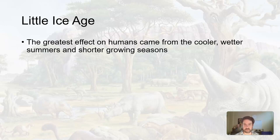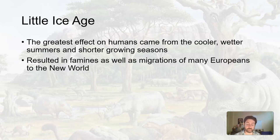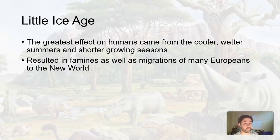The greatest effect on humans came from the cooler, wetter summers and shorter growing seasons. Because it was a little bit cooler in Europe, you had shorter growing seasons, which resulted in famines. If you have shorter growing seasons for crops, you're not going to be able to produce as many or as large crops. So you're not going to be able to feed a population — less crops, smaller crops means people are going to starve. So famine occurred.